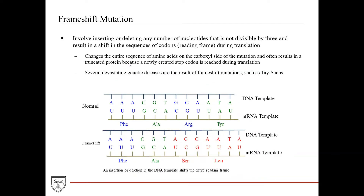A frameshift mutation is arguably the most devastating. It involves inserting or deleting any number of nucleotides that is not divisible by three. If you deleted three nucleotides, you'd still preserve the rest of the sequence — the DNA and mRNA sequences remain the same, affecting only that one area. But if you insert or delete a number not divisible by three, it shifts the entire sequence.